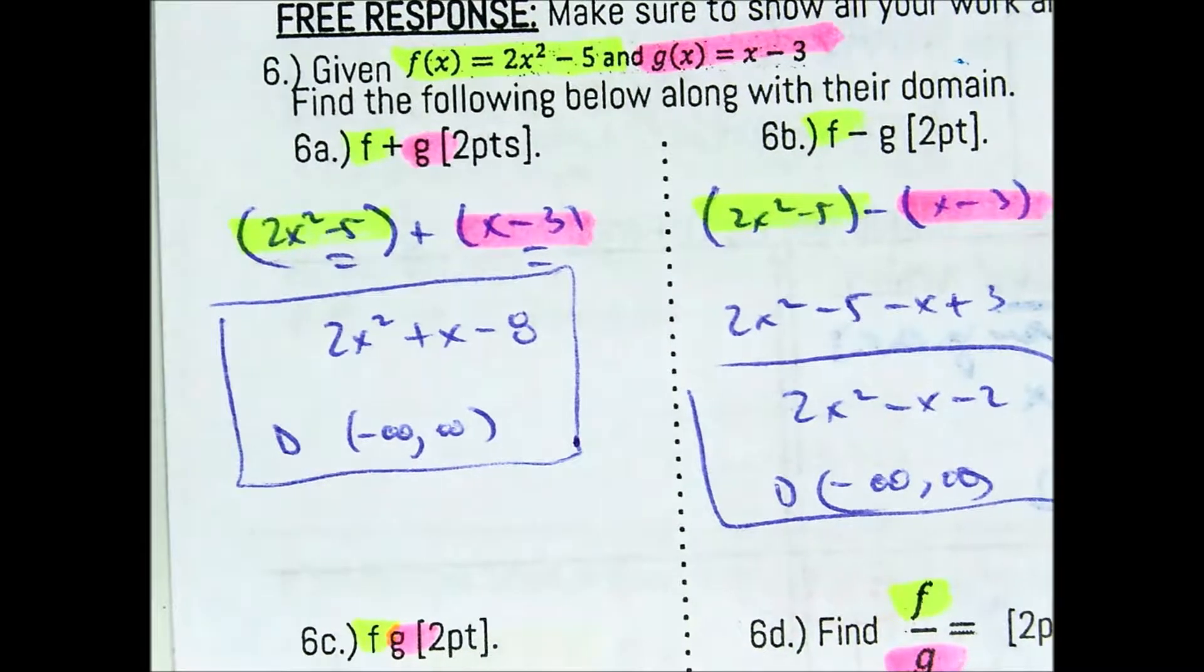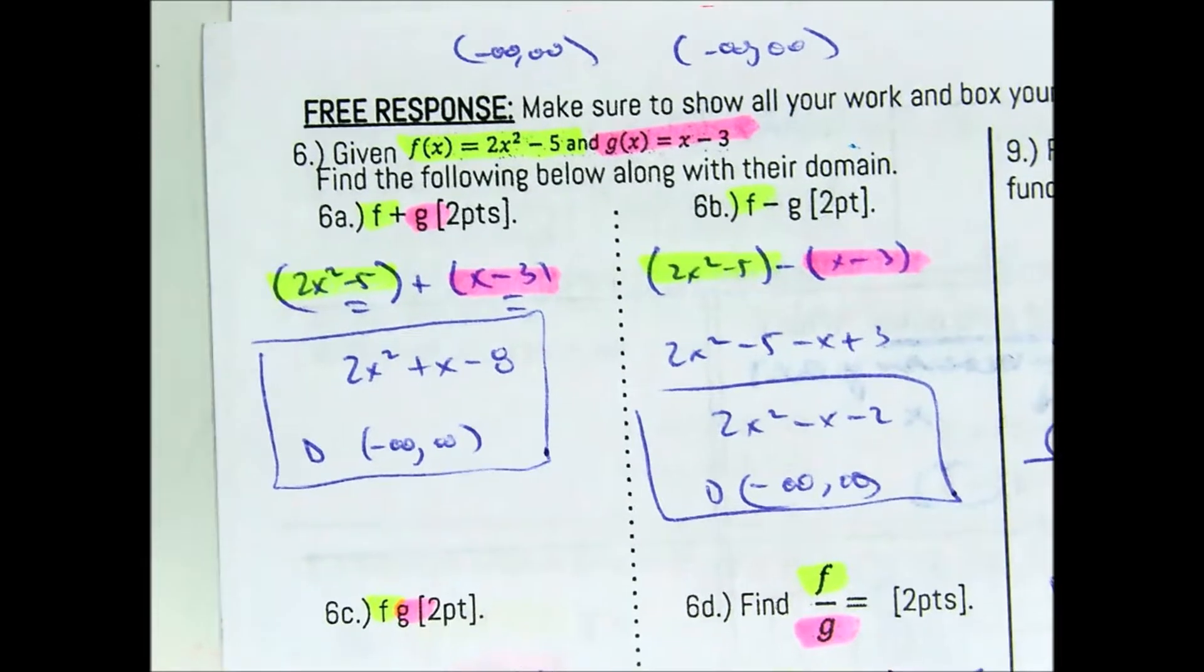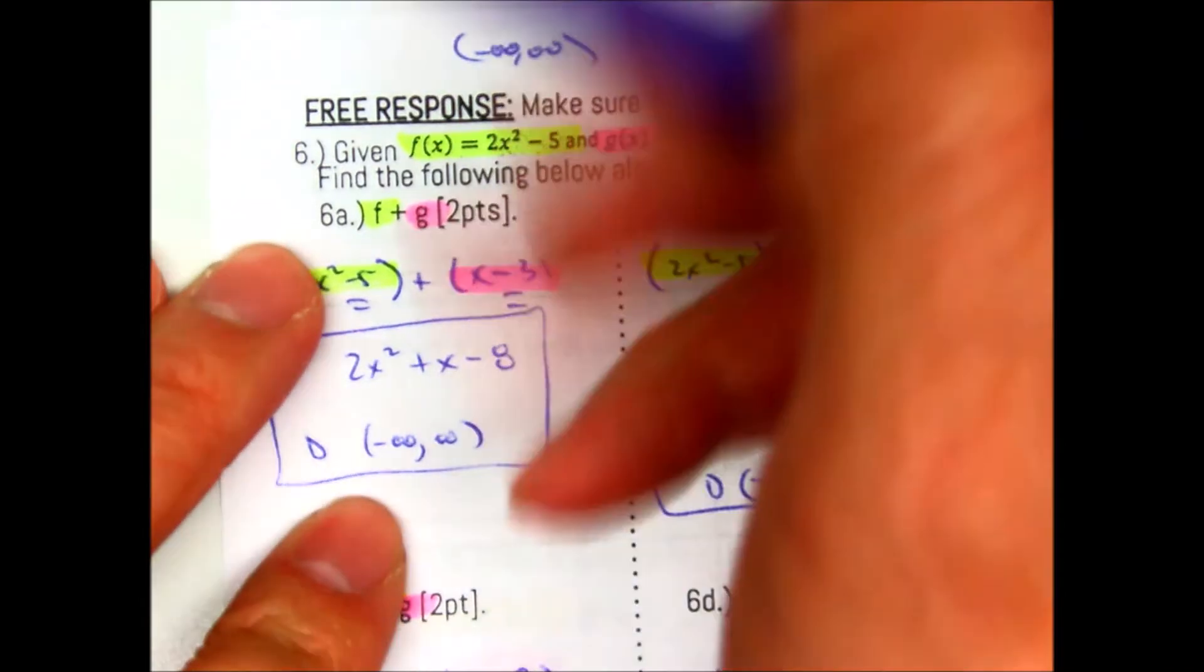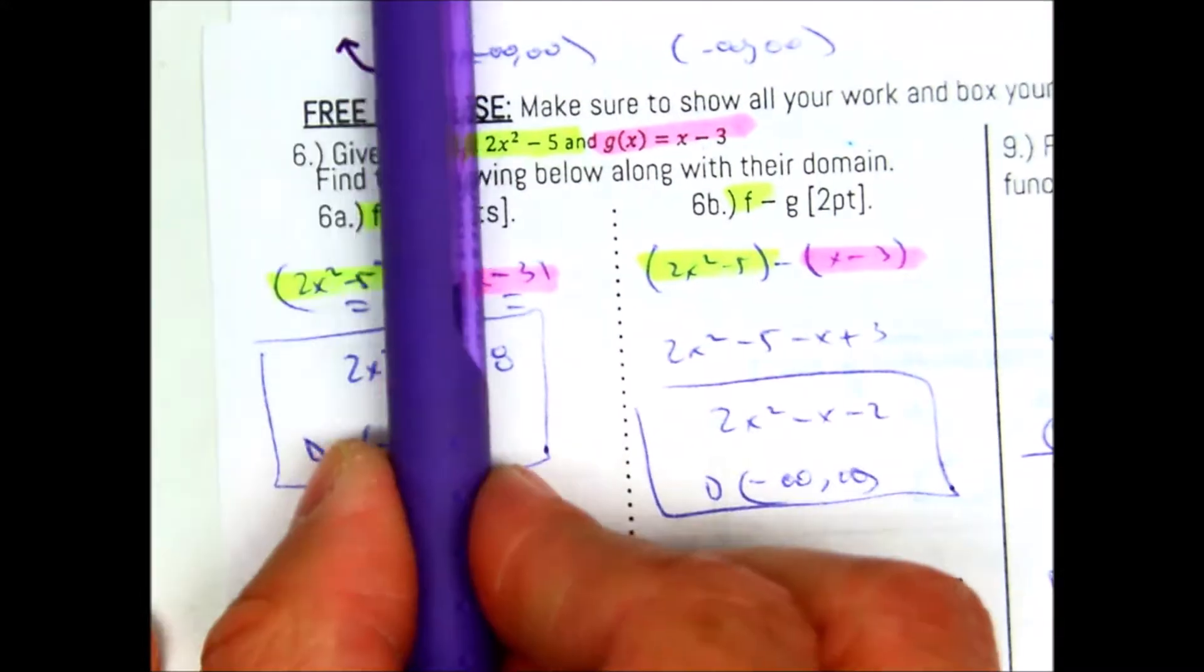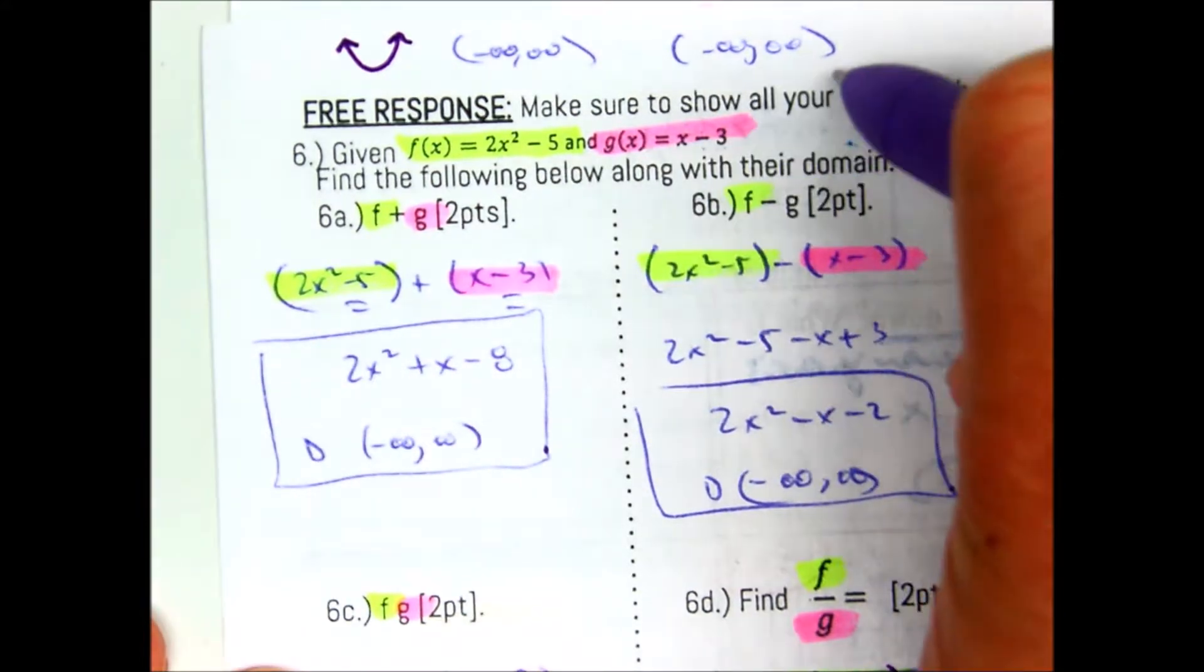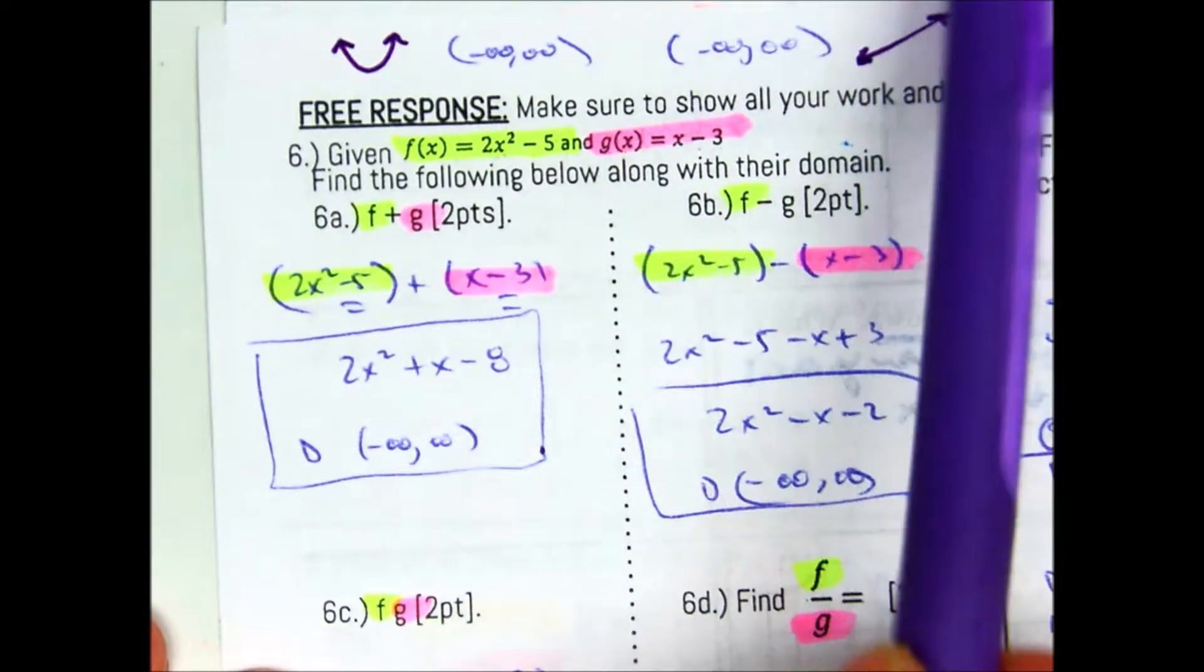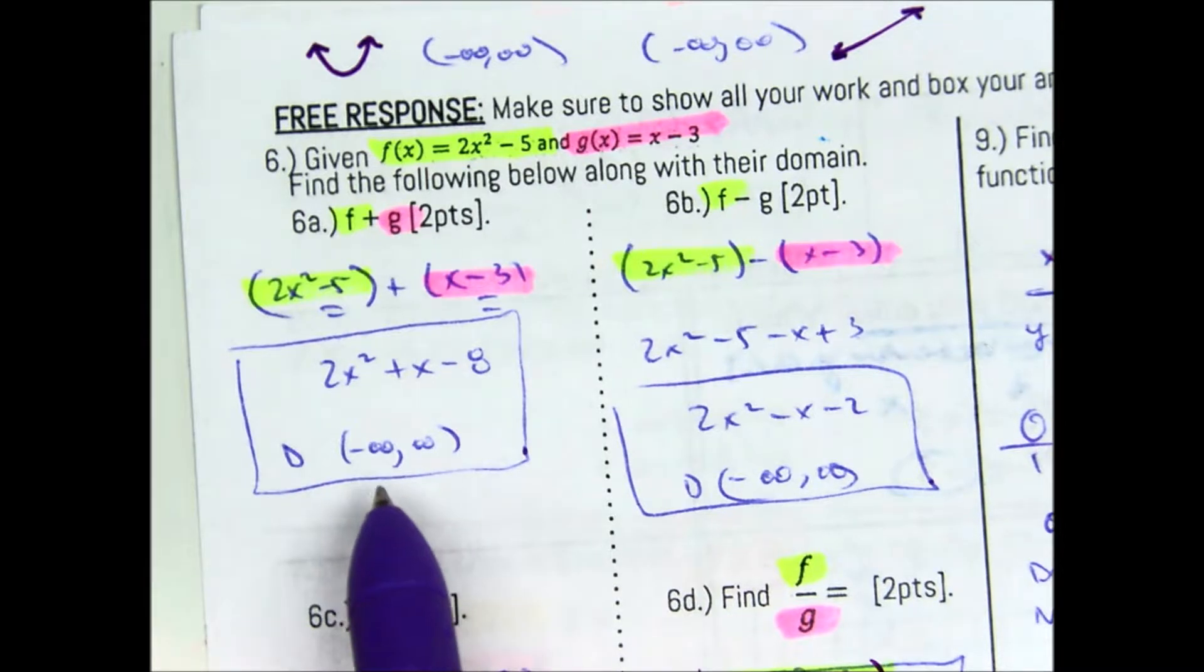This one says F plus G. So with addition, you don't have to use parentheses. So you can drop them. So 2x squared, there's no like terms, there's a positive x, and negative 5 and a negative 3 gives you negative 8. So you get the domain. Basically, what you're doing is you're adding the two functions together. So if you look at their domains, you're looking for the least restrictive domain. Well, 2x squared minus 5 is basically a quadratic. And if you go left to right, then you have a domain of you can pick any number from negative infinity to positive infinity. G(x) equals x minus 3 is a linear equation. Same thing. Going from left to right, you have arrow to arrow. That means you can pick any x value.